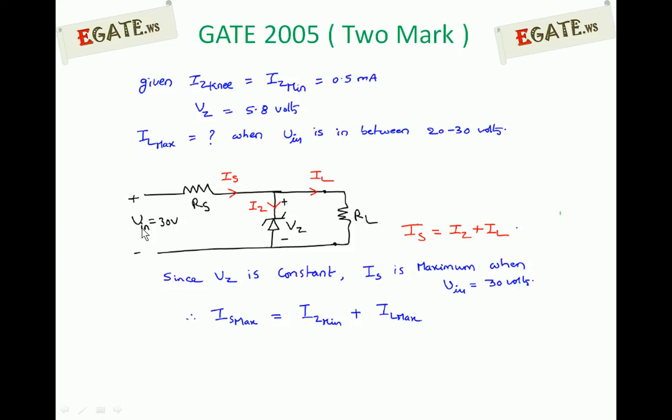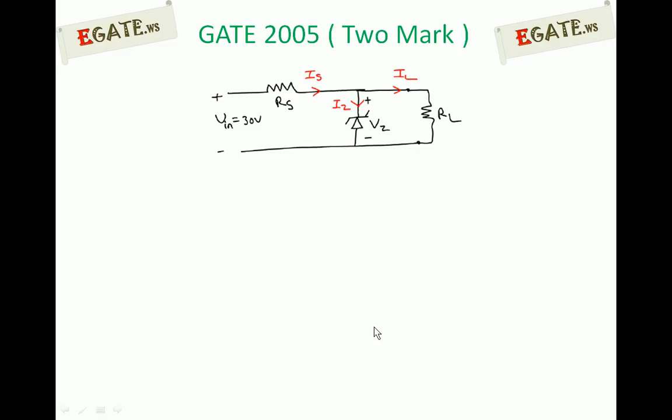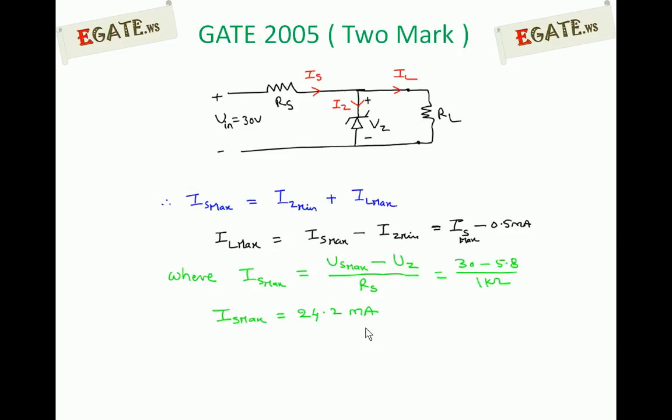Whenever V input is 30 volts, at that time Is is maximum. That Is maximum can be written as Iz minimum plus IL maximum. Because this is maximum and it is constant, if it is minimum definitely the entire current has to go through that load. So that will be treated as maximum load current. Is maximum is equal to Iz minimum plus IL maximum. Where IL maximum is nothing but Is maximum minus Iz minimum. Iz minimum is given as 0.5 milliampere.